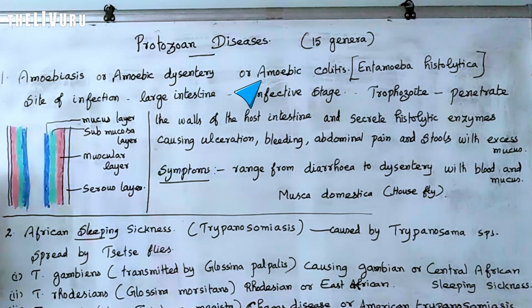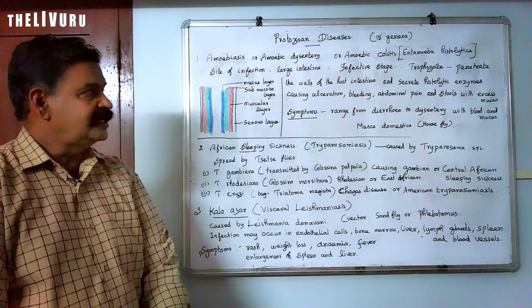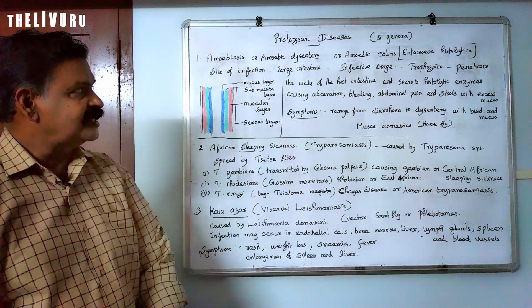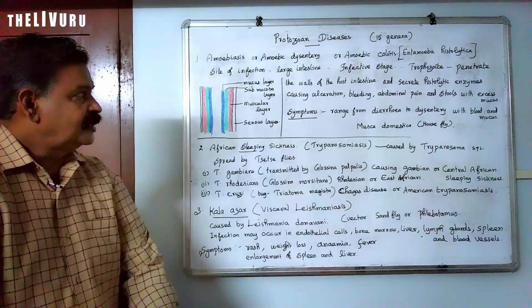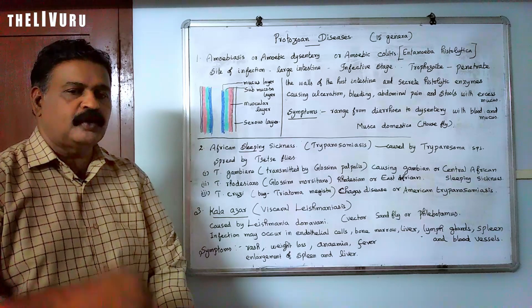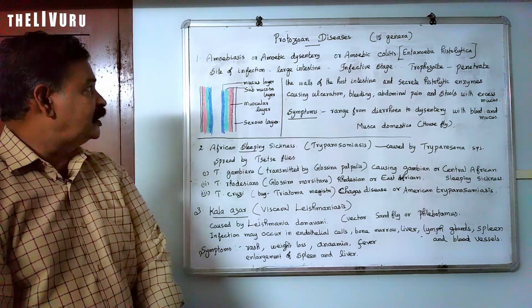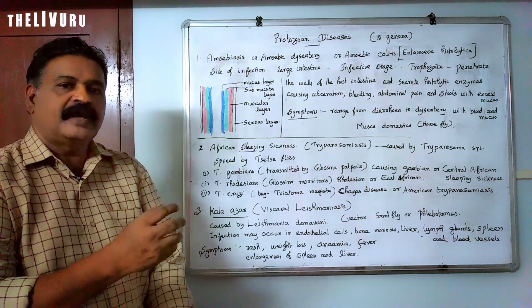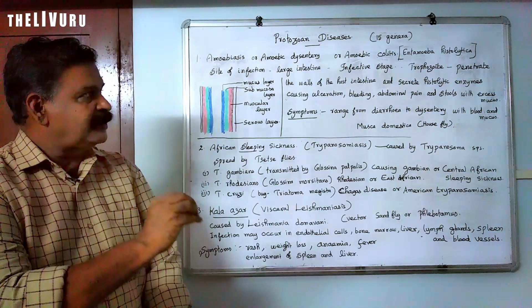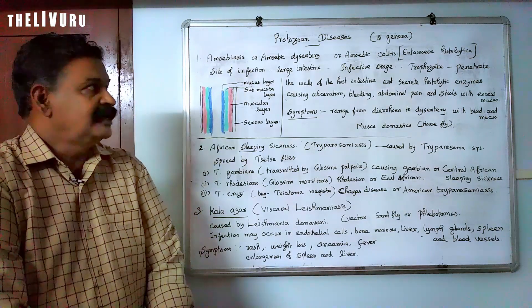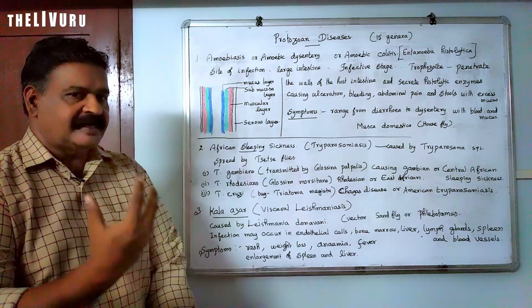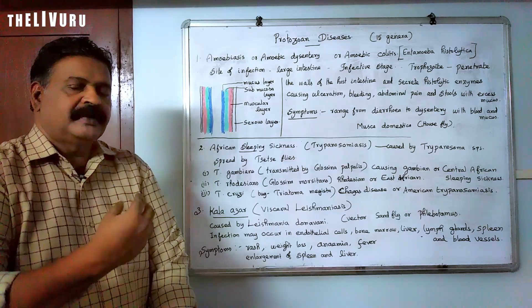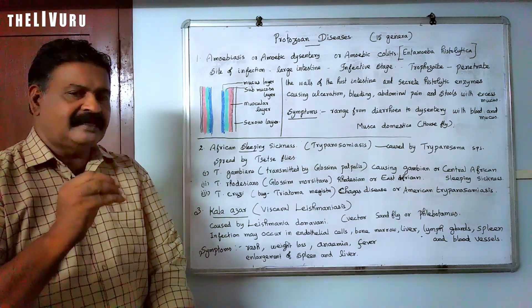The first disease is amoebiasis, also called amoebic dysentery or amoebic colitis. This disease is caused by the pathogen Entamoeba histolytica, which is a protozoa. It is transmitted by drinking and eating contaminated water and food. Colitis refers to infection of the colon, and Entamoeba histolytica lives inside the colon.